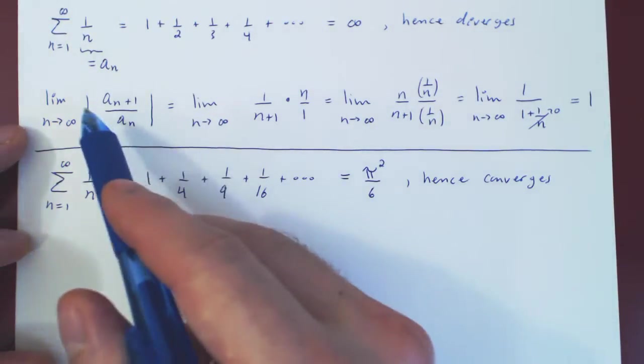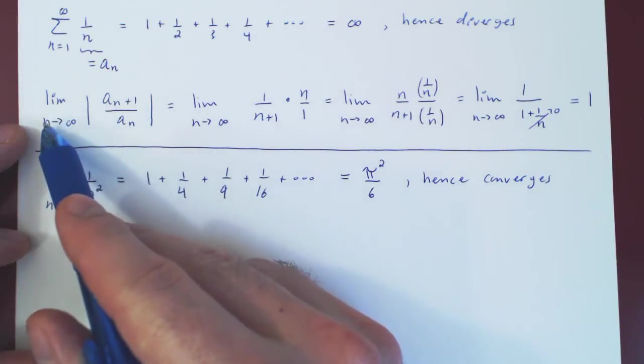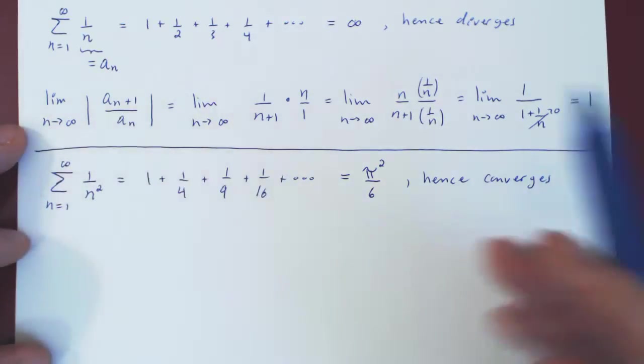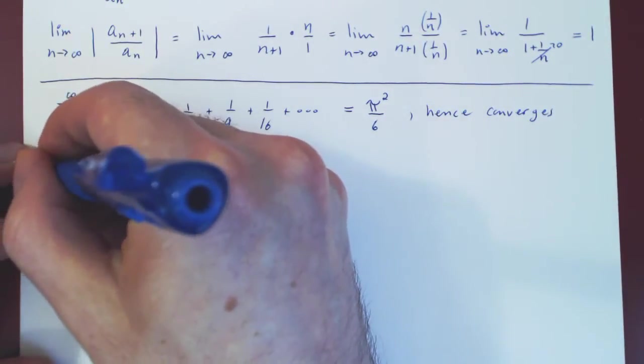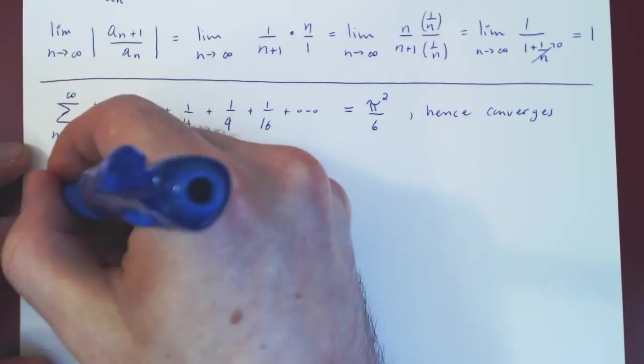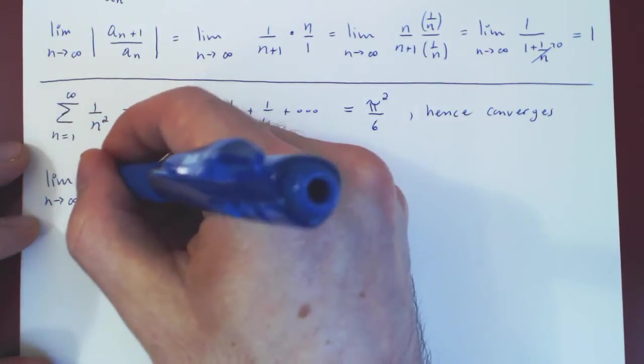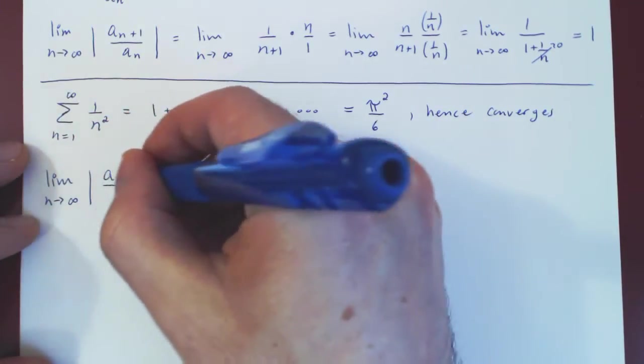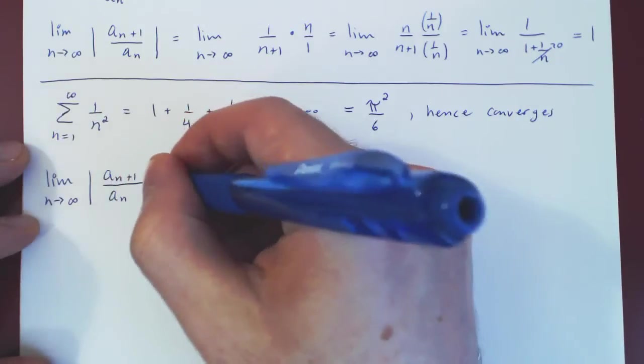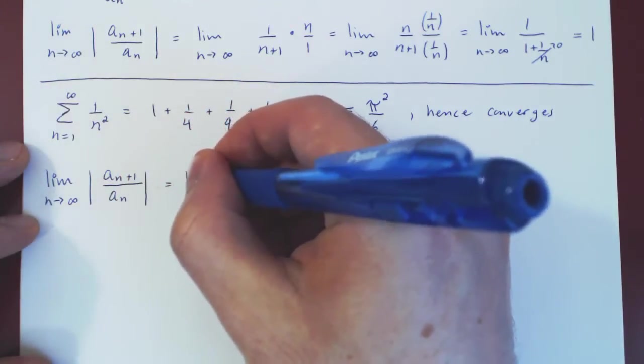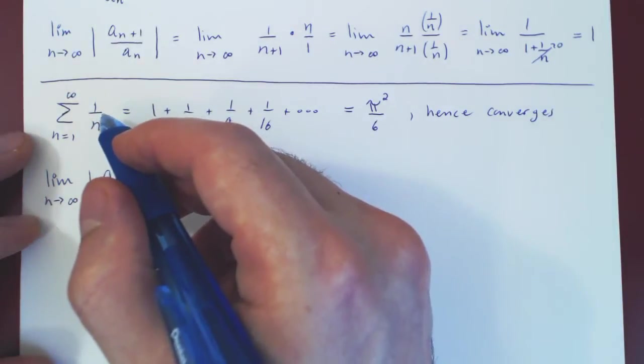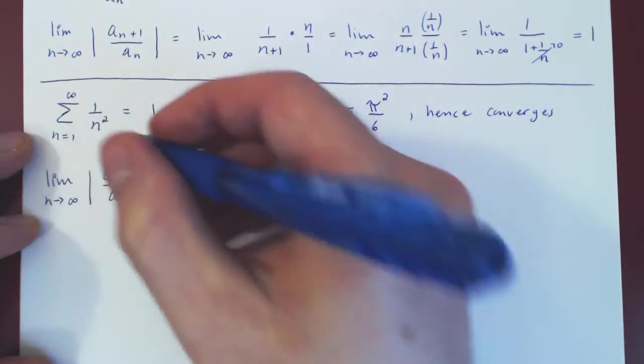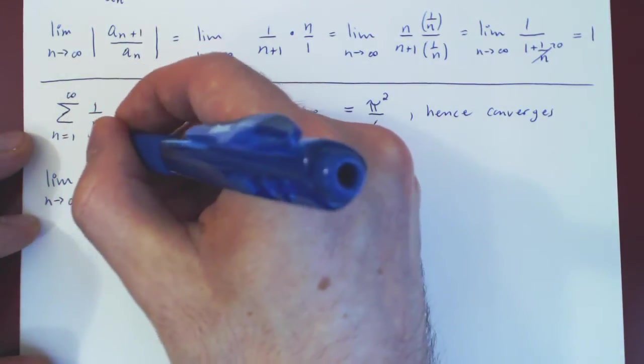Let's now look at the limit as n tends to infinity of a_{n+1} over a_n in absolute value. Well, the terms we're summing are 1 over n squared. This is of course a_n.